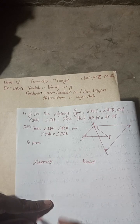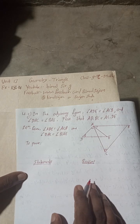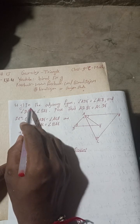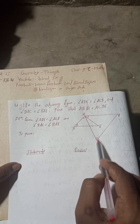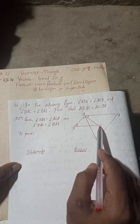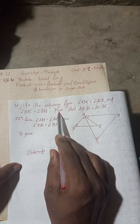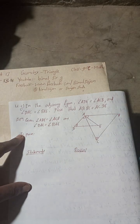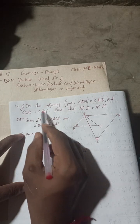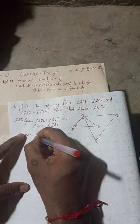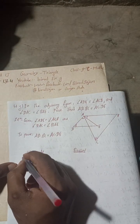Let's begin the solution. My writing is not good, but you can listen to the audio twice or thrice and you will understand. Here in the adjoining figure, given: angle ADE is equal to angle ACB, and angle DAC is equal to angle BAE. To prove: AD into BC is equal to AC into DE.